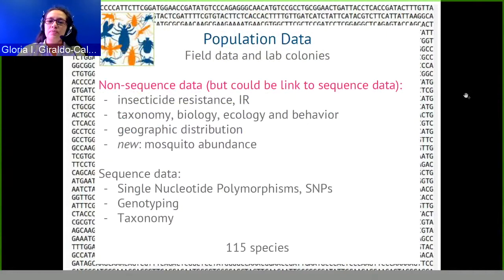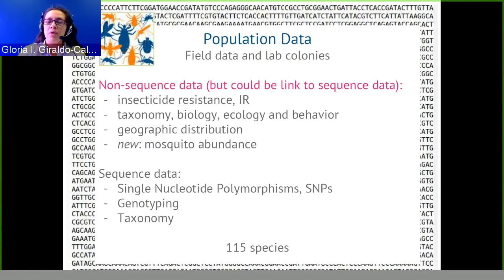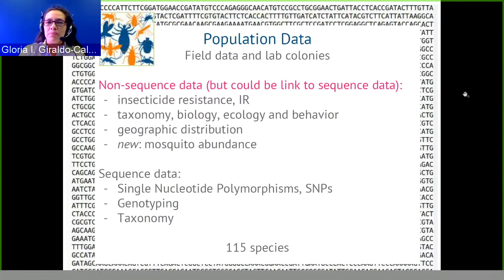Our population data comes from the field or the lab. VectorBase has been recognized for 13 years mostly for having genomes, but we are now building this population data. Especially useful for US audiences, we are starting conversations with mosquito control districts — this happened after the Zika outbreak. They collect weekly or monthly data about where vectors are and which insecticides are being applied, and we are working to produce Google Maps-type displays so that scientists can see where the vector is located and which insecticide is being applied.